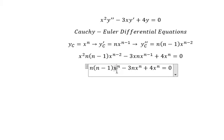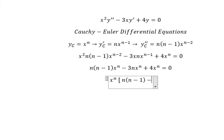We get n times n minus 1 minus 3n plus 4. Now we need to find the solution of this expression.